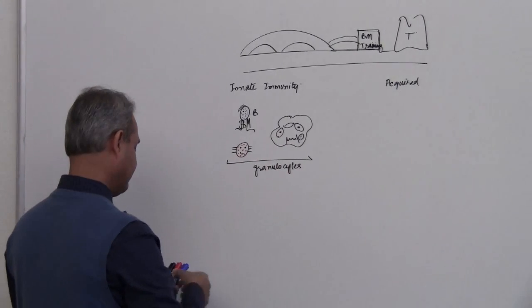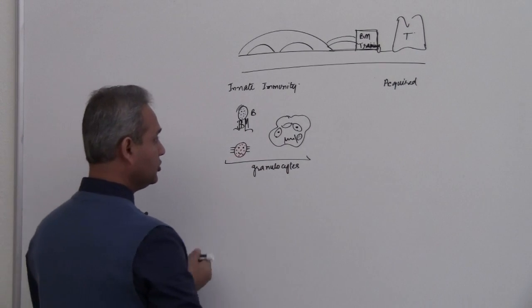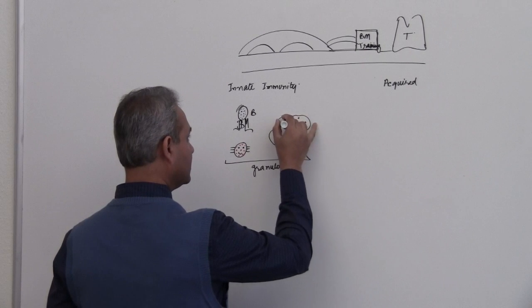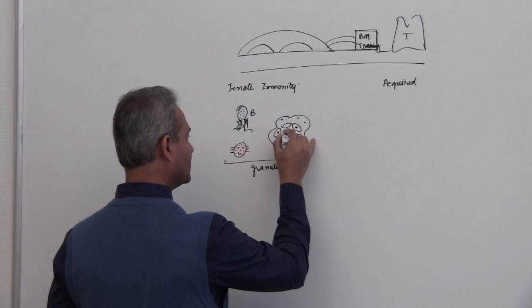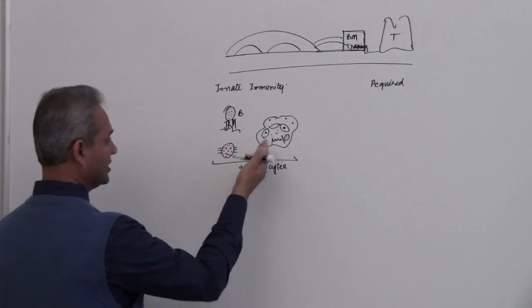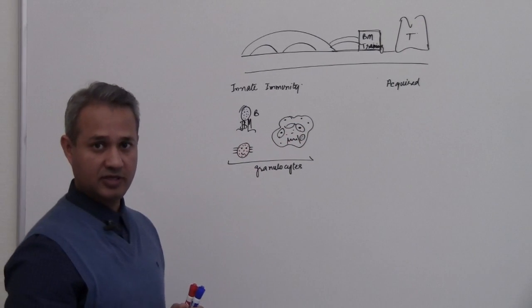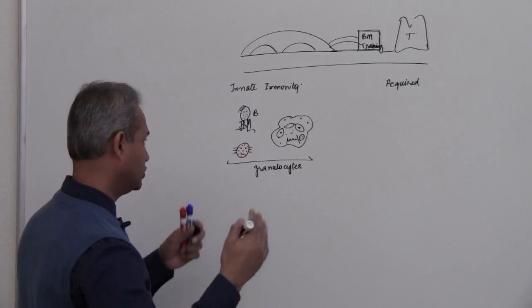So granulocytes, they have granules in them. Neutrophil actually has light pink granules. It is not entirely neutral but as compared to these guys it looks clear and so that is why it is called a neutrophil. It is neutral in color.